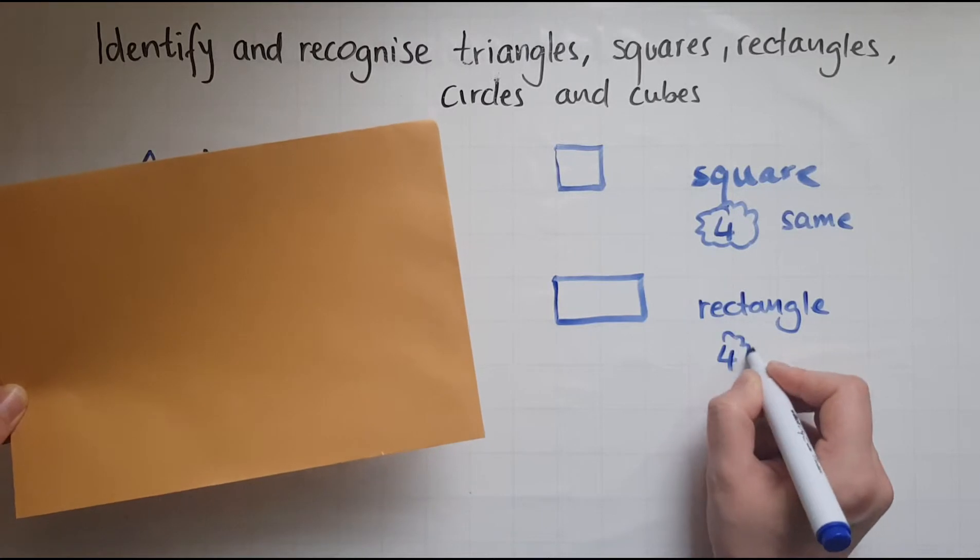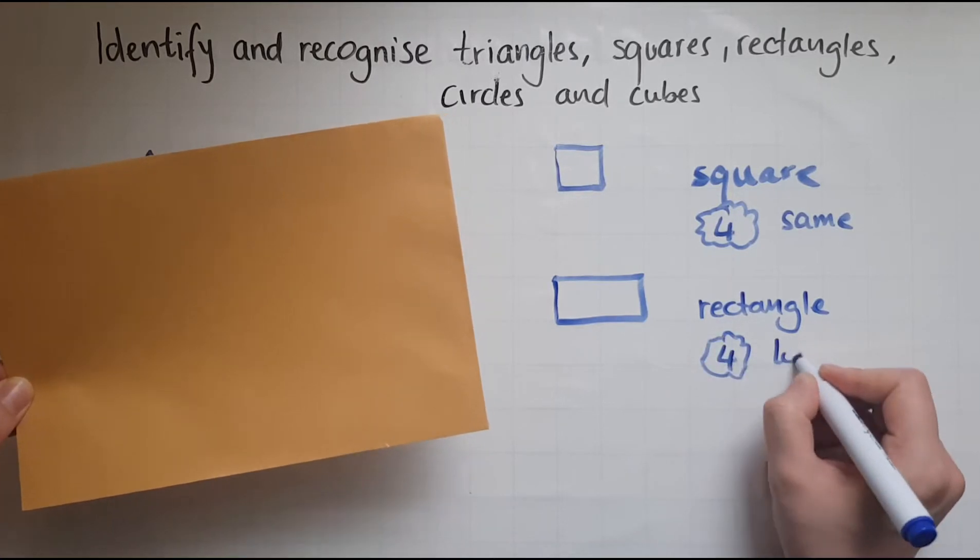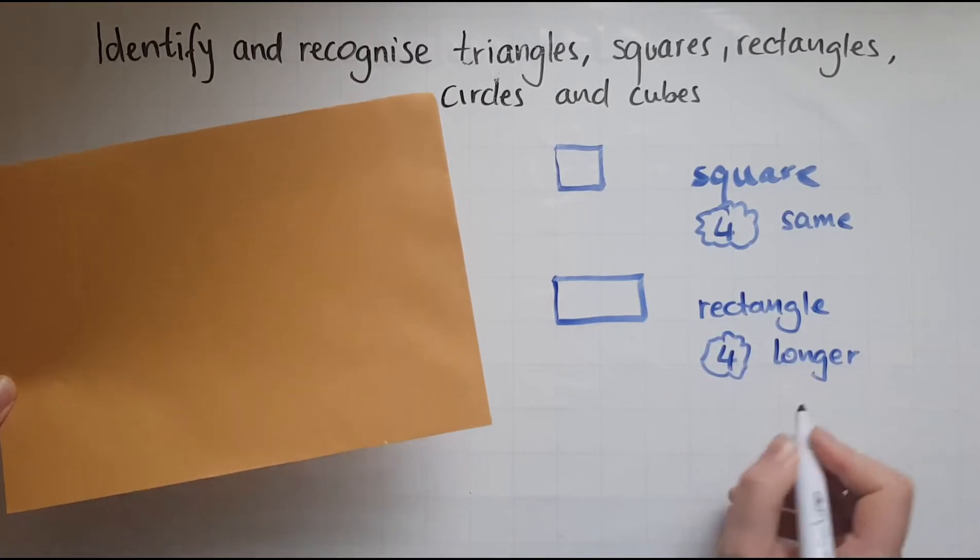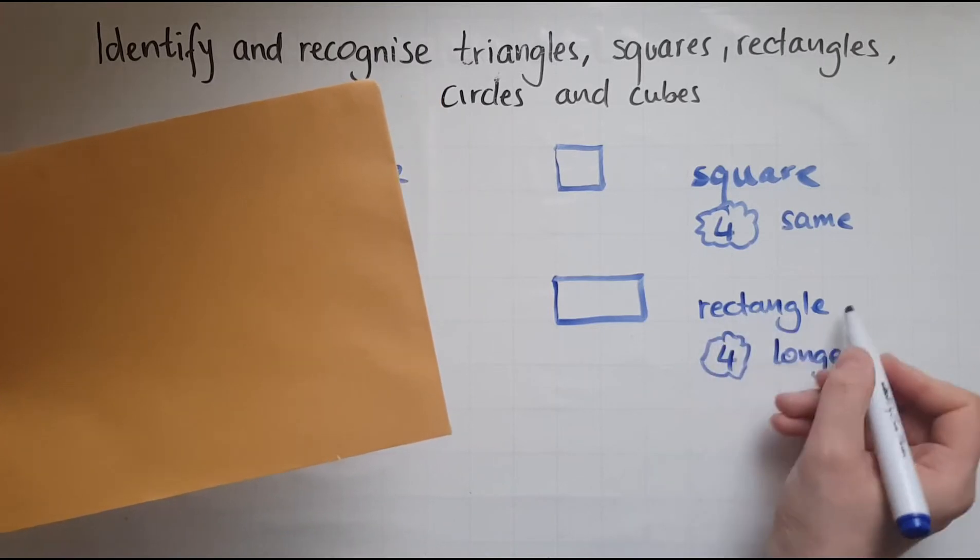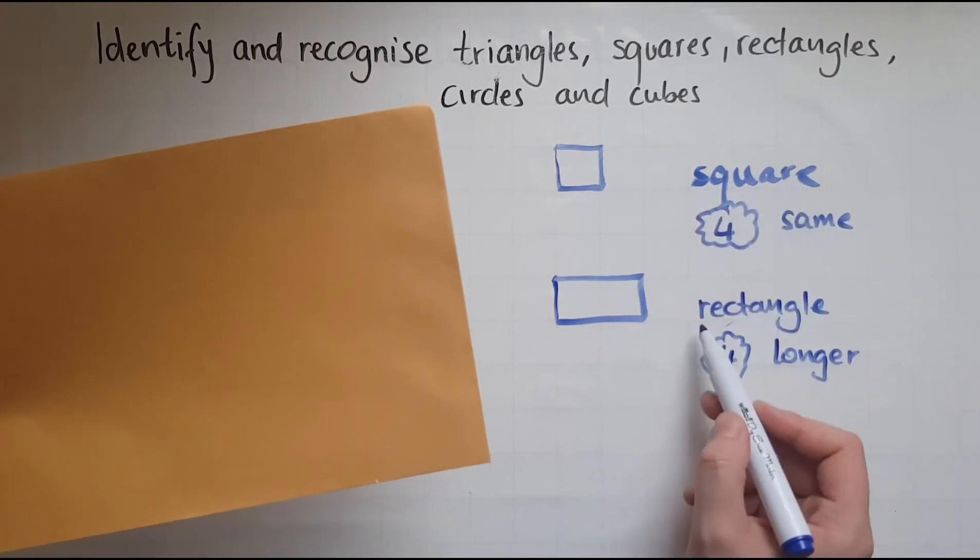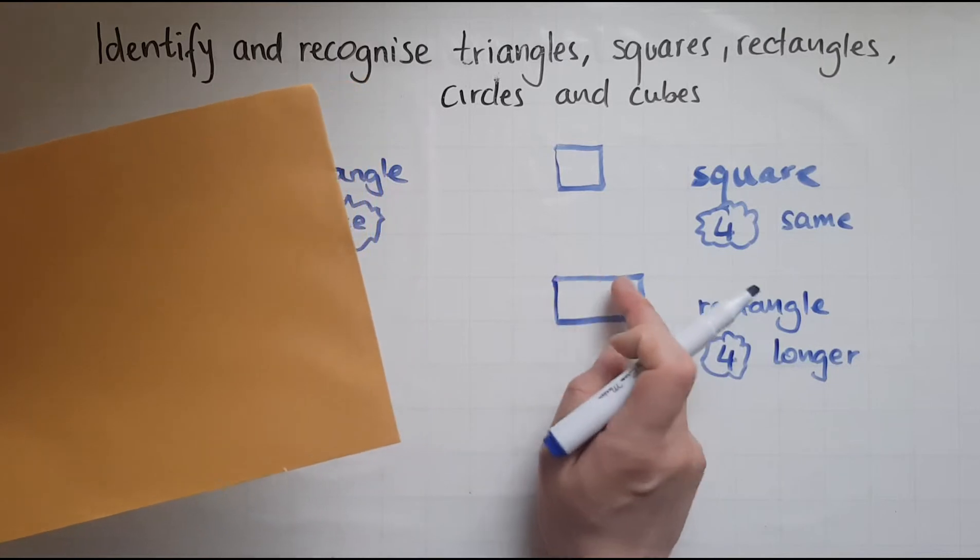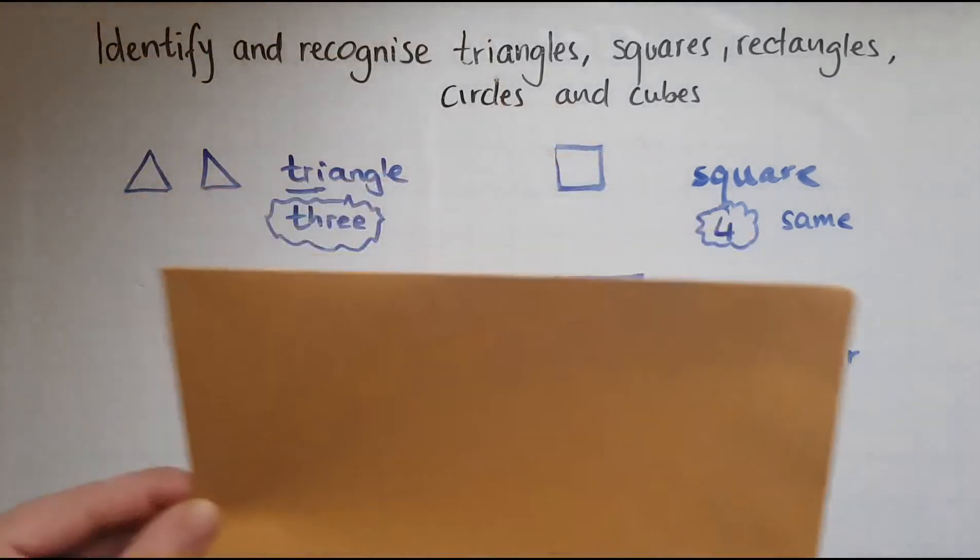So still has four, but is longer. Just like the word rectangle is longer than square. Rectangle has some longer sides as well.